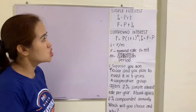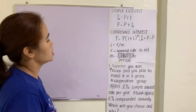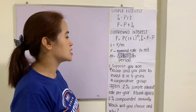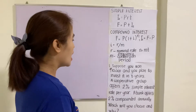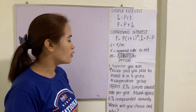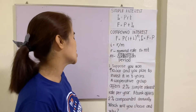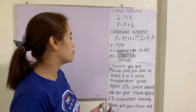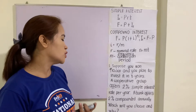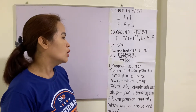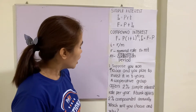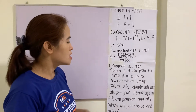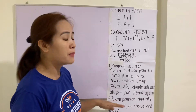Let's illustrate these two types of interest. Suppose you want to invest ten thousand pesos for five years. A cooperative group offers two percent simple interest rate per year; a bank offers two percent compounded annually. Which will you choose and why? Where will you invest your money — in the cooperative or in the bank?